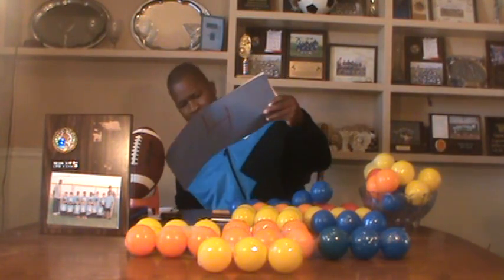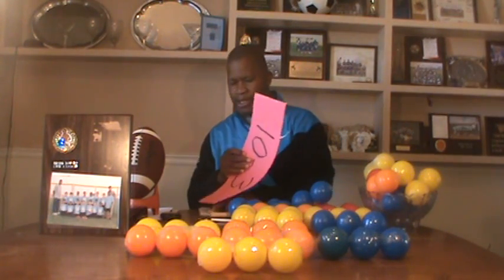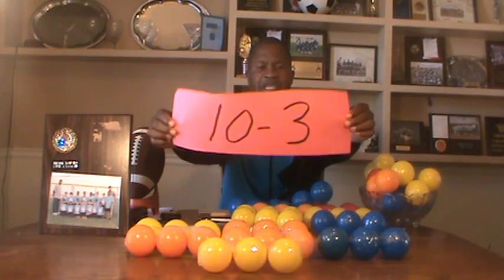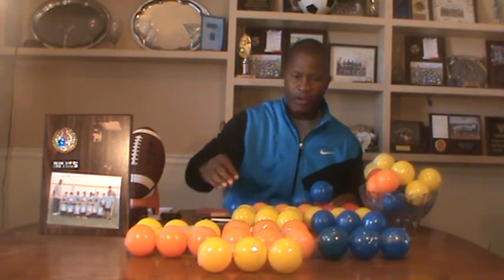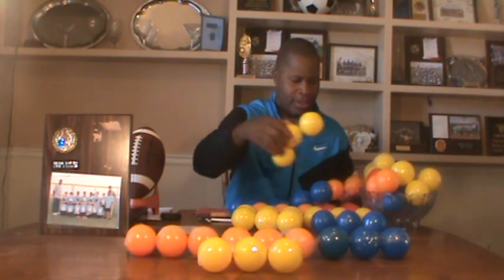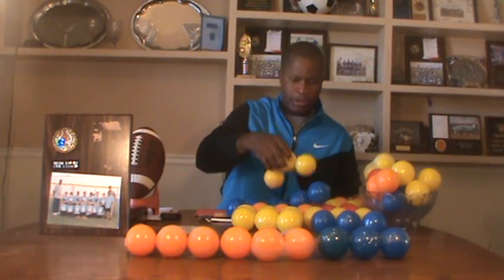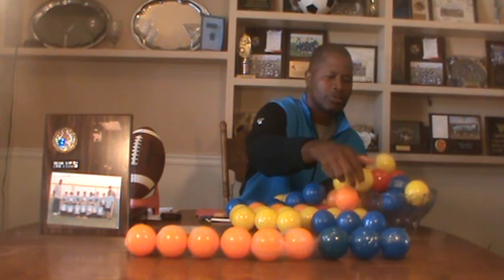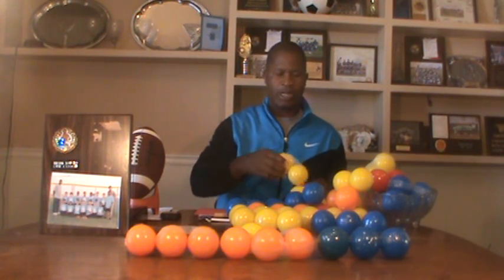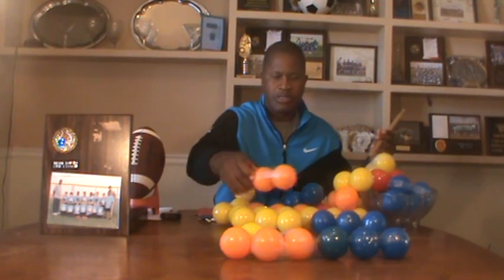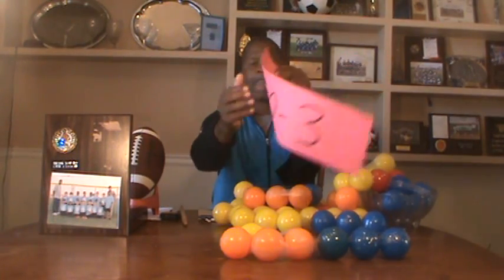Now we're going to work on subtraction. The first problem is ten minus three. I have nine balls grouped up here and I need one single ball, so now we have ten. We're going to take away three. After removing those three, what do we have left? One, two, three, four, five, six, seven. Ten minus three equals seven.